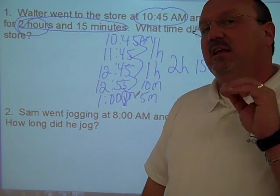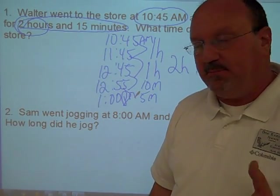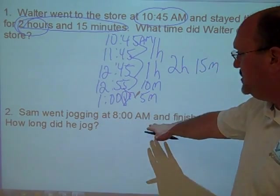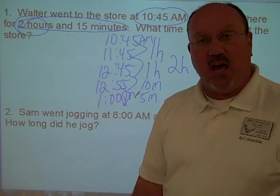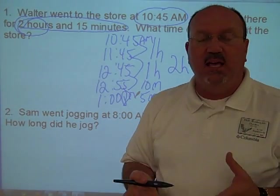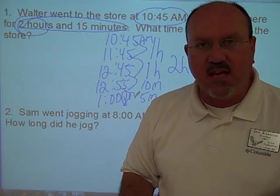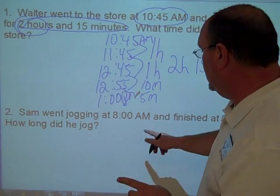Time chunking. Let me show you the other type of problem that we use time chunking on. And that is Sam went jogging at 8:00 and finished at 9:15. How long did he jog? Now we have to find the missing elapsed time using the same strategy, time chunking. Watch this.